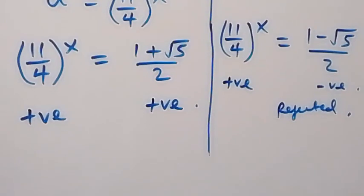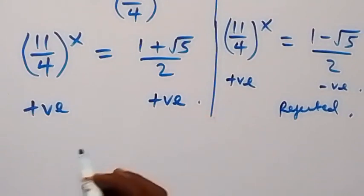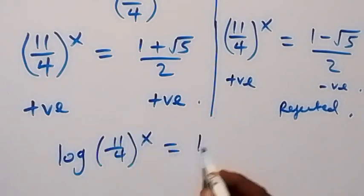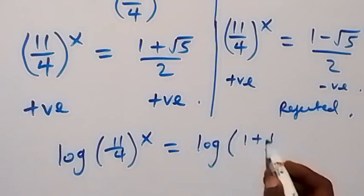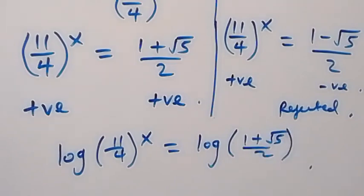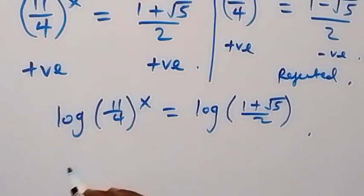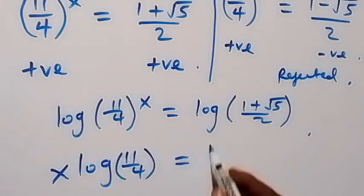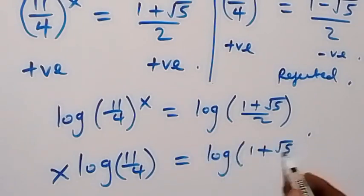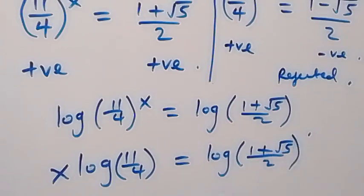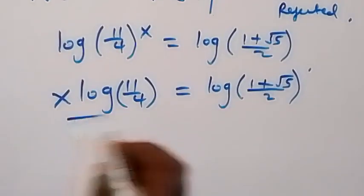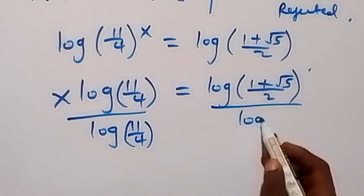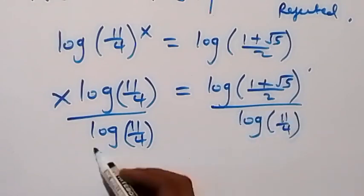Let's take the log of both sides. We have log of (11/4) raised to power x equals log of (1 plus root 5) over 2. Applying the power law of logarithms, x times log(11/4) equals log((1 plus root 5)/2). Dividing both sides by log(11/4), the log(11/4) cancels on the left, leaving x.